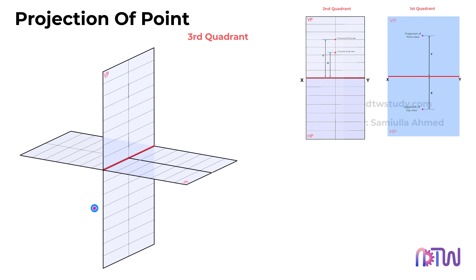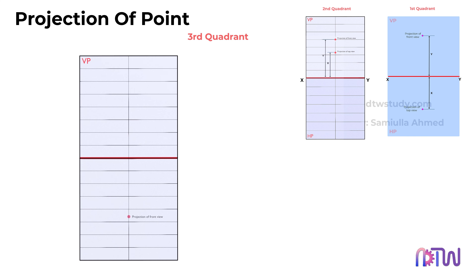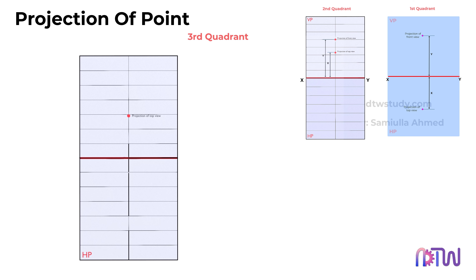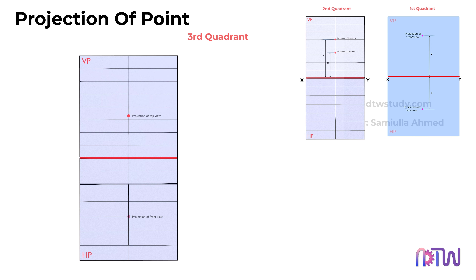Consider a point in the third quadrant — that is, behind the VP and below the horizontal plane. The front view is projected onto the VP, and the top view is projected onto the HP. Upon rotating the HP by 90 degrees, the top view aligns above the xy-line, while the front view positions below the xy-line. Hence, in the third quadrant, the projected views are represented accordingly.